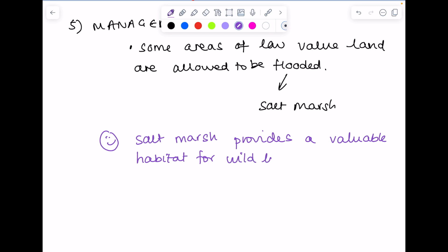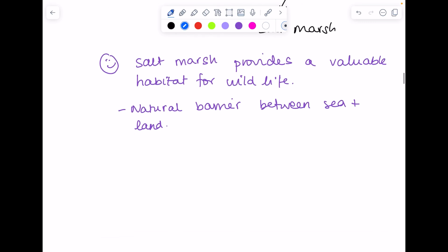We're going to be providing a natural barrier between the sea and land. Where that land is owned by landowners, they'll require compensation. Not that that's a particularly bad thing, I'm just writing it here, because effectively they're losing their land to the salt marsh.